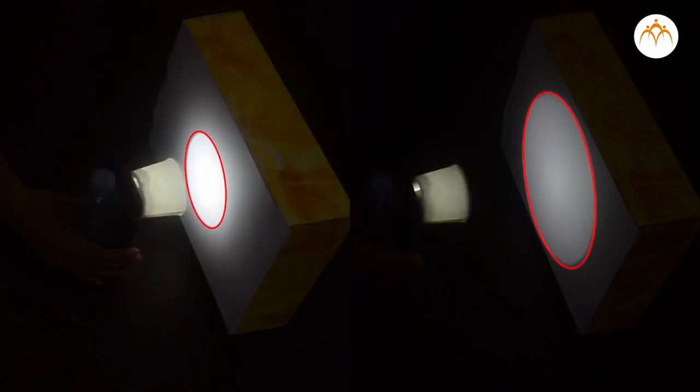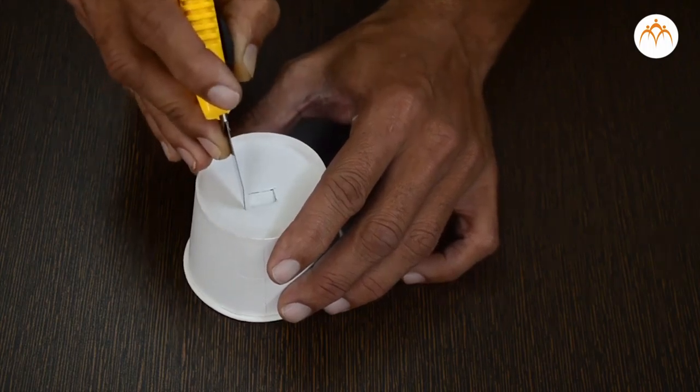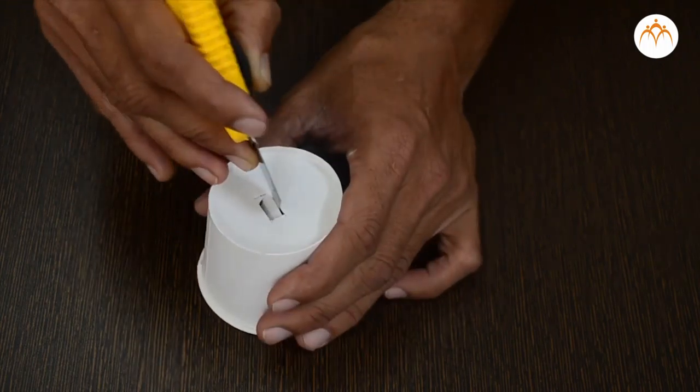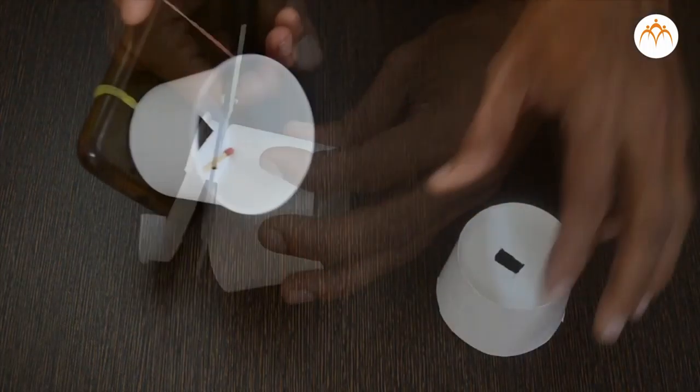You must be thinking why the shape is a circle. It is because of the shape of the opening this torch has. Let us make a small cut on this cup and attach it to our torch.